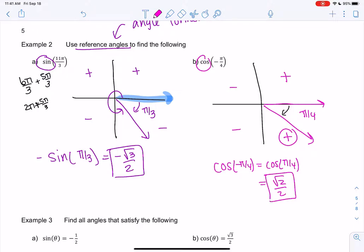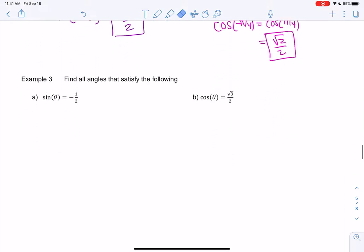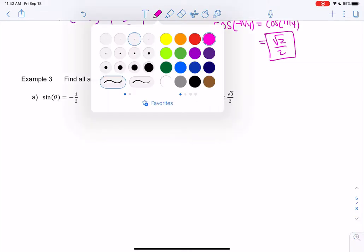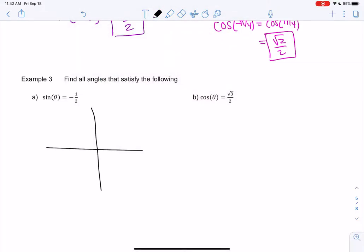So for those of you who struggle with these, I think drawing this every time really helps. It just helps you visualize if it's positive or negative, rather than trying to memorize when it's positive or negative. But yeah, let's try two more going the opposite direction. So we want to find when sine is negative 1 half. So again, I'm going to draw the graph. Sine is the y value, so we have positive, positive, negative, negative.